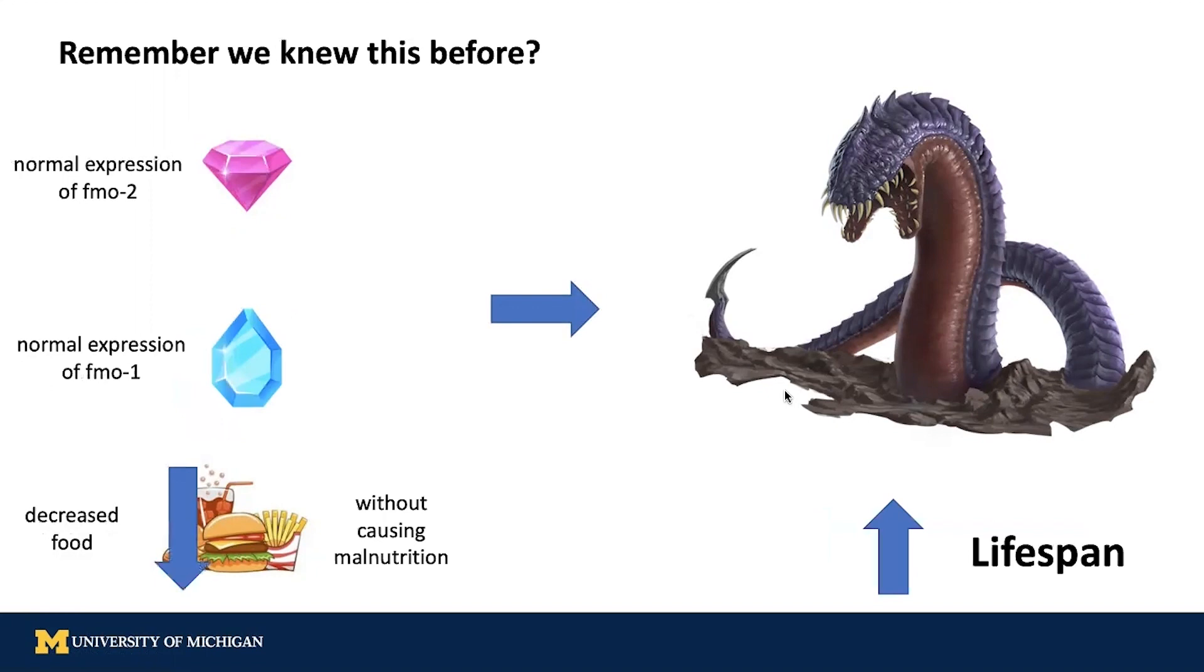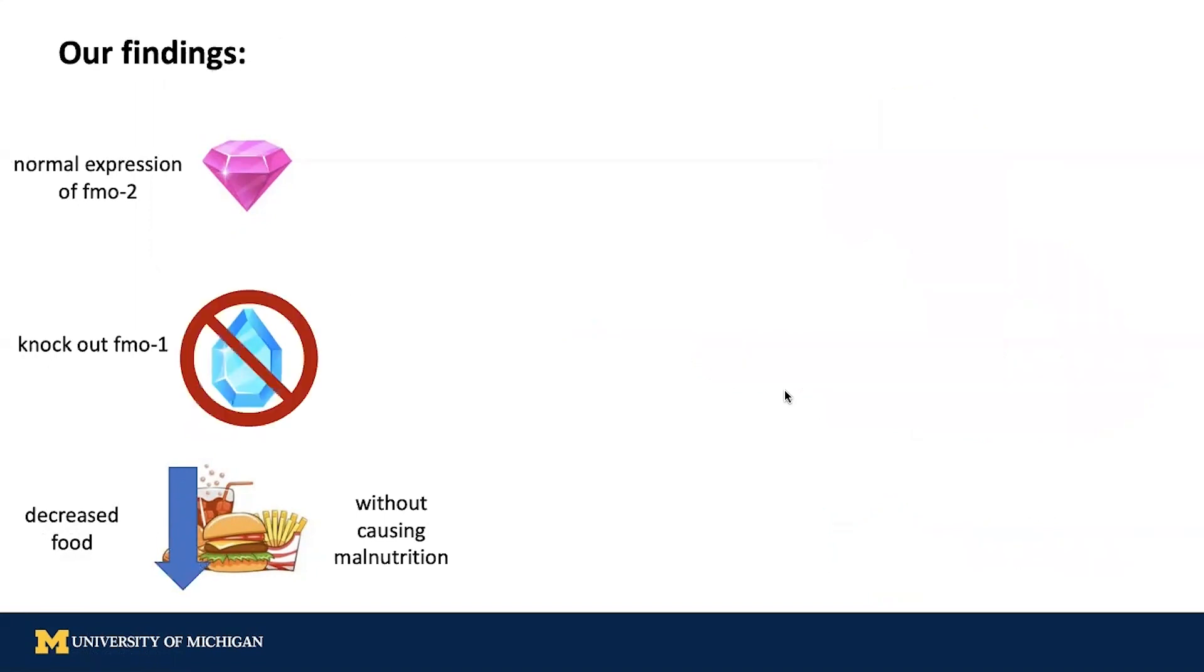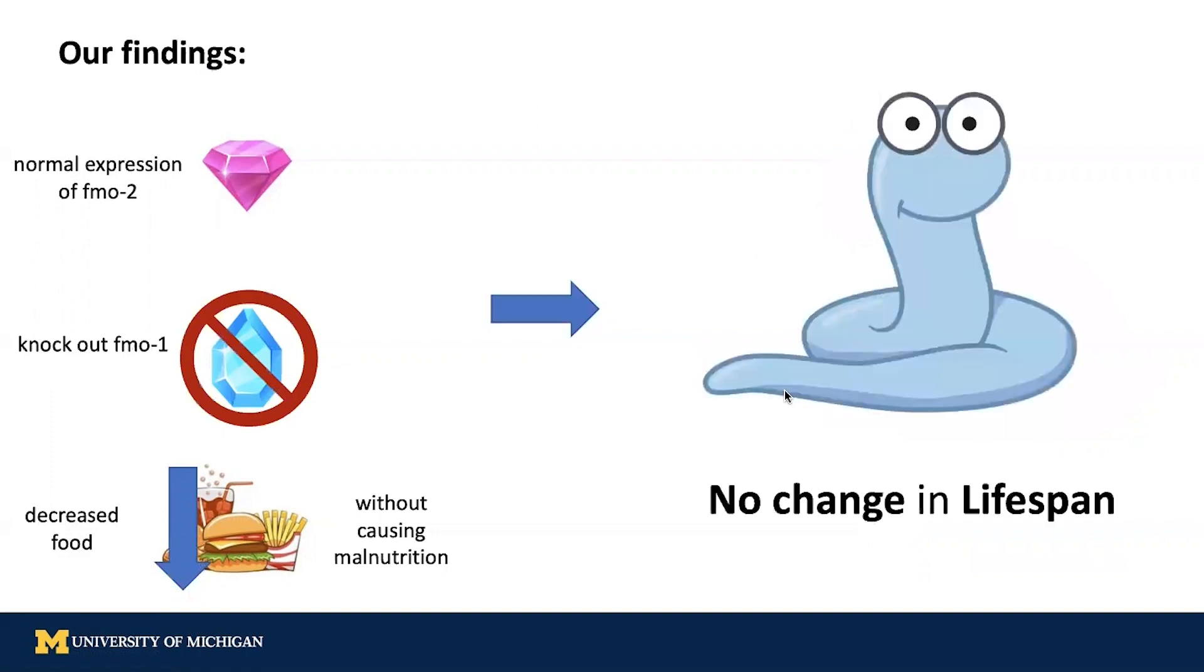Remember we knew this before? If we decrease food, the worm becomes long-lived. Now when we kept the reduced food, but got rid of the blue gem, we observed that the worm did not become long-lived. It remained a cute, innocent, regular worm.